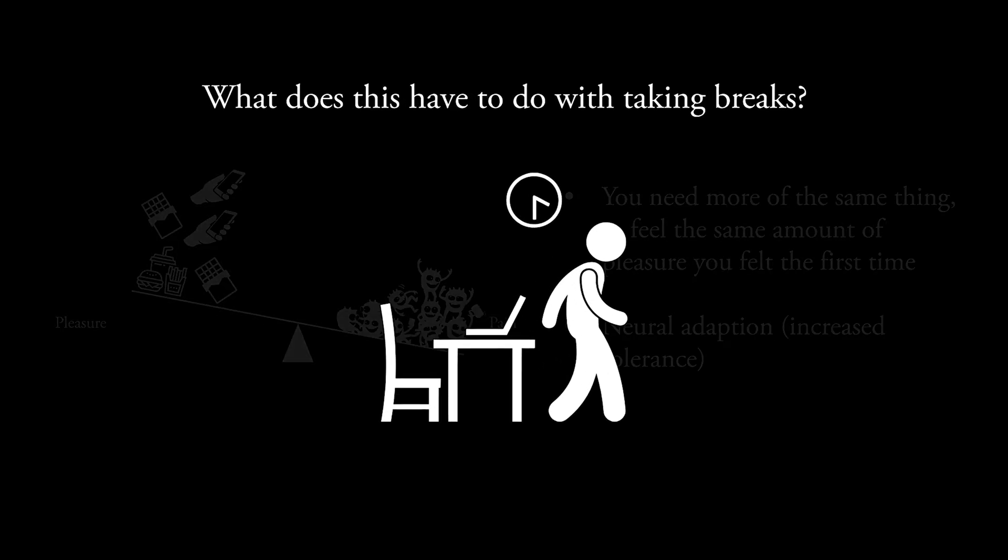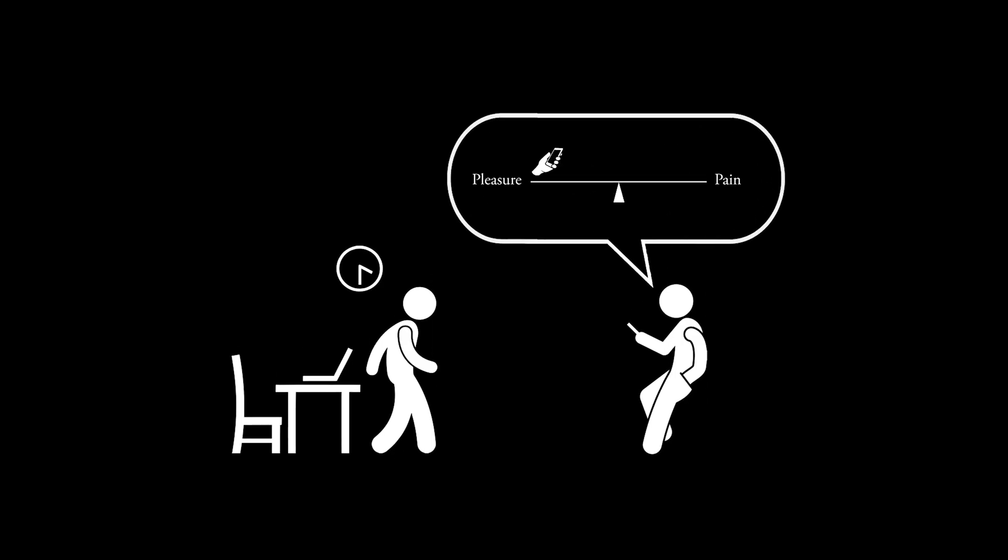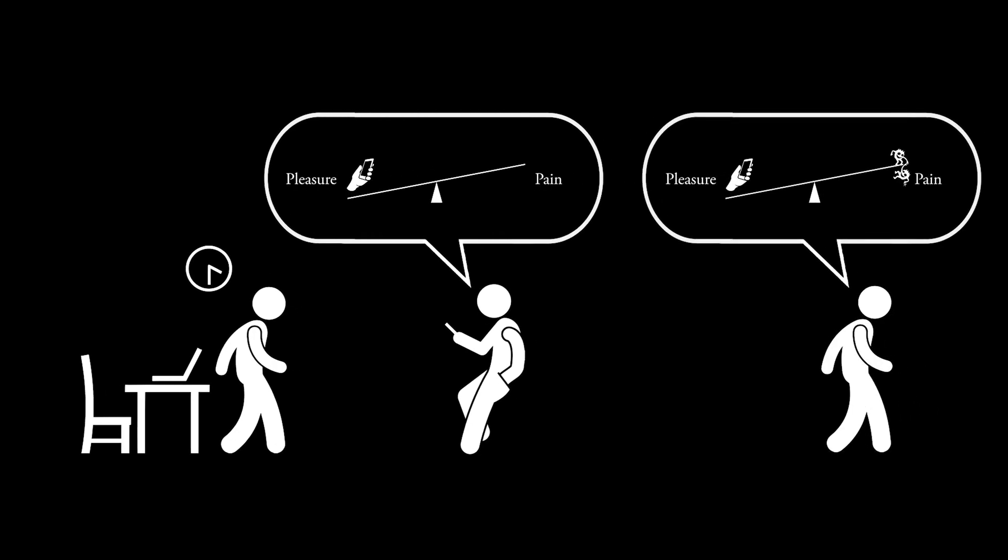But what does this have to do with taking breaks at work? Well, most of us turn to social media, or other high stimulating activities during our breaks. In other words, we indulge in activities on the pleasurable side, and flood our brain with dopamine. This tips the scale hard toward the pleasure side. And as we saw, our brain will start to rebalance this by cutting back on our dopamine production.